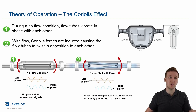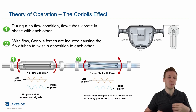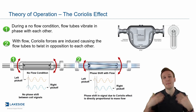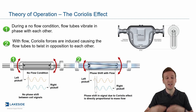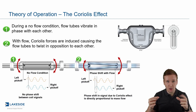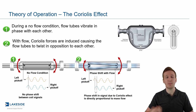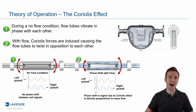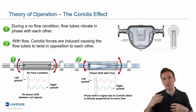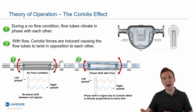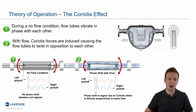When we introduce flow, we see the Coriolis effect — a deviation between the left side and the right side. They become out of sync with one another, and that phase shift difference is directly measured and is directly proportional to mass flow rate. We put it through our calibration lab, determine how many milliseconds equals a specific mass flow rate, and from that point on it is a linear equation.